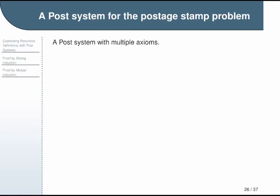As I mentioned when I introduced this system earlier, it represents a classic strong induction problem sometimes referred to as the postage stamp problem. It's also an example of a post system with multiple axioms. Recall the two axioms: 4 is in the set P and 5 is in the set P. Then we have one rule R where x is in P and y is in P implies x plus y is in P.